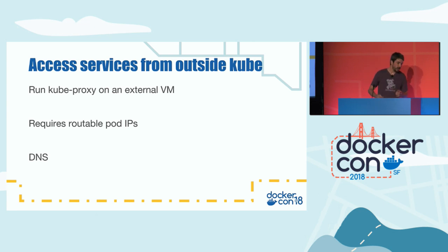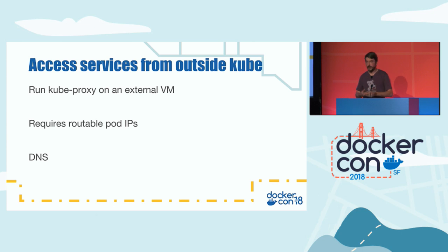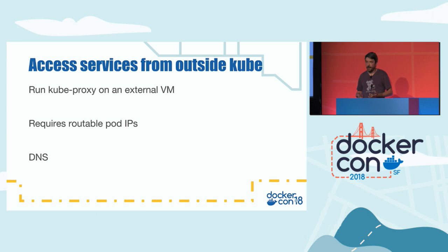Sometimes you want to access Kubernetes services from outside the cluster — from older applications that aren't containerized. A solution is to run kube-proxy on those instances with no kubelet or docker — just kube-proxy — which creates IP table or IPVS rules exactly as we saw, allowing native cluster access. This requires routable pod IPs: on GCP this is native with GKE; on AWS it's possible with special CNI plugins. Once you can access the service IP, you can also access the Kubernetes DNS server.